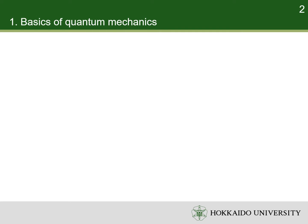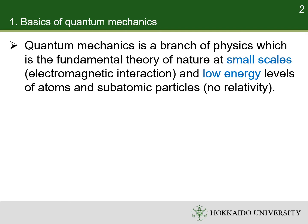We start from the basics of quantum mechanics. Quantum mechanics is a branch of physics, which is a fundamental theory of nature at small scales and low energy levels. Small scale is the scale of electrons, atoms and molecules. At this scale, the dominant interaction between particles is electromagnetic. Low energy means the speeds of particles are much lower than the speed of light, so that we don't need to consider any effect from relativity.